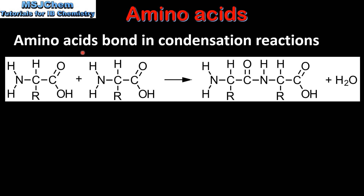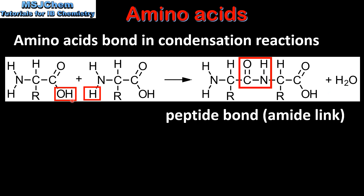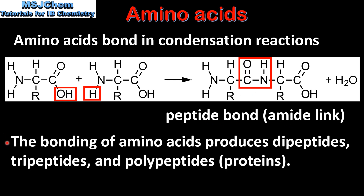Amino acids bond in condensation reactions. Here we have two amino acids reacting together in a condensation reaction to produce a dipeptide and a molecule of water. The water molecule is formed from the OH group on one amino acid and the hydrogen atom on another amino acid. The bond between the two amino acids is called a peptide bond or an amide link. The bonding of amino acids produces dipeptides, which are composed of two amino acids, tripeptides, and polypeptides, which are also called proteins.